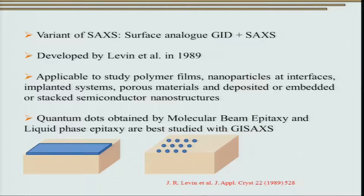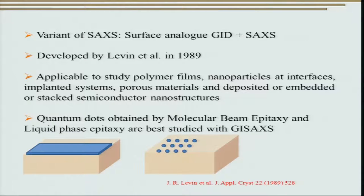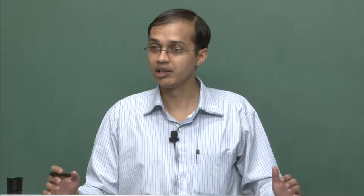Grazing incidence small angle X-ray scattering is a variant of small angle X-ray scattering, but it is used extensively for carrying out characterization on the surface. It was developed by Levin et al. in 1989, so you can realize this technique is not very old. The development in this technique has been tremendous in the last 15 years and it is used extensively in almost all synchrotron sources all over the world.